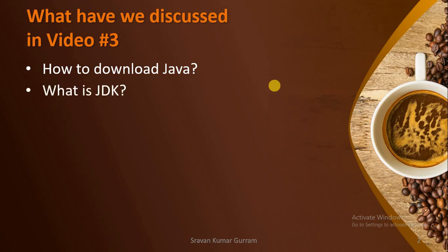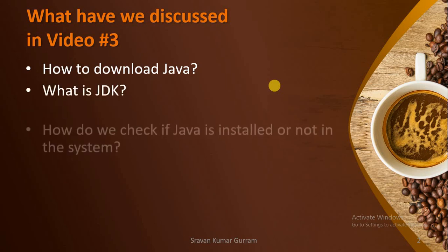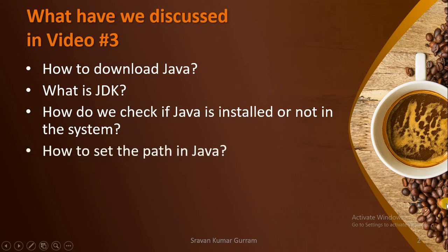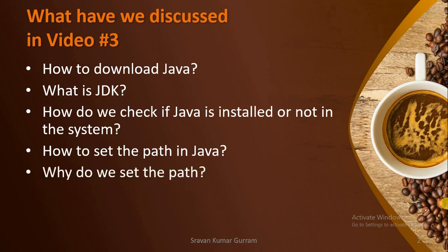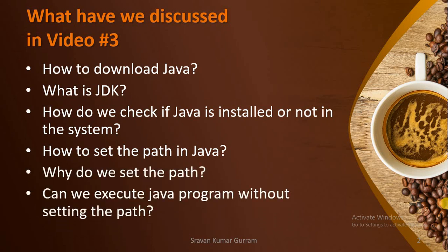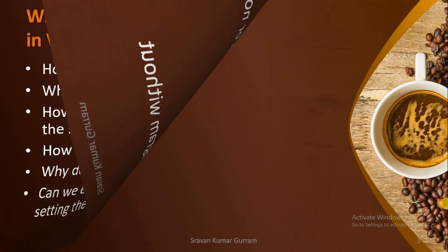How to download Java? What is JDK? How do we check if Java is installed in the system? How to set the path in Java? Why do we set the path? Can we execute a Java program without setting the path?